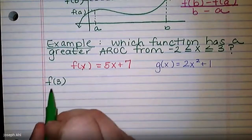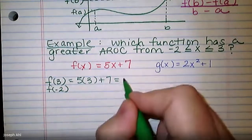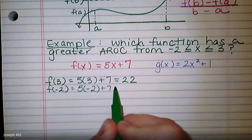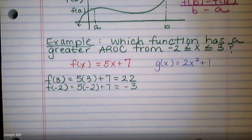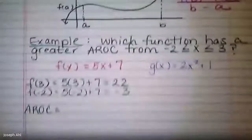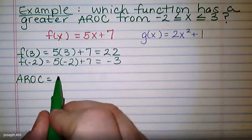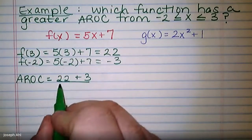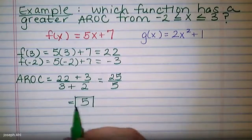f(3) = 5(3) + 7 = 15 + 7 = 22. Then f(−2) = 5(−2) + 7 = −10 + 7 = −3. Therefore for f(x), the average rate of change is f(b) − f(a) over the difference in x values: (22 − (−3)) over (3 − (−2)), which is 22 + 3 over 3 + 2, giving us 25 over 5, for an average rate of change of 5.